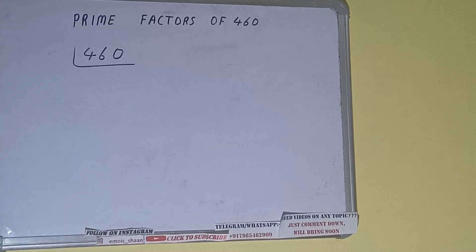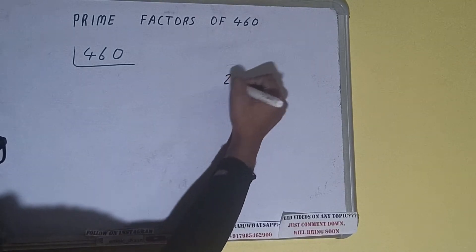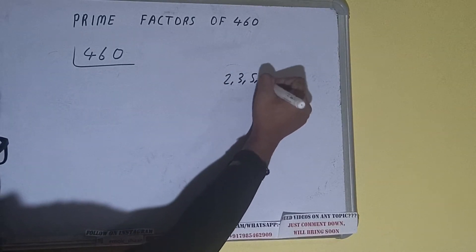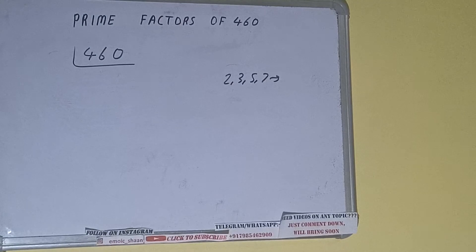The next thing we need to know about is what are prime numbers. Prime numbers are numbers that are divisible by 1 and the number itself like 2, 3, 5, 7 and so on. Alright.